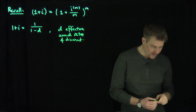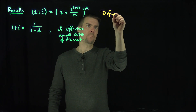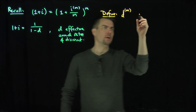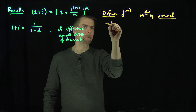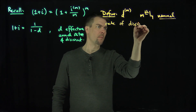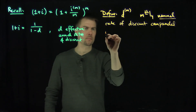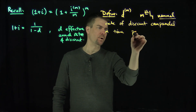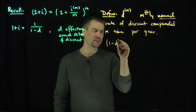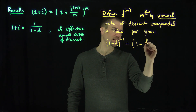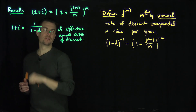Exactly analogously to the effective annual rate of interest, we can define a nominal rate of discount — the quantities d^(m), the m-thly nominal rate of discount, compounded m times per annum. This is defined by the relationship that (1 - d)^(-1) = (1 - d^(m)/m)^(-m), exactly as we did for the nominal rate of interest.